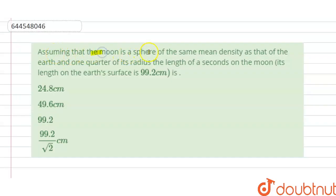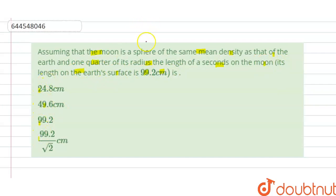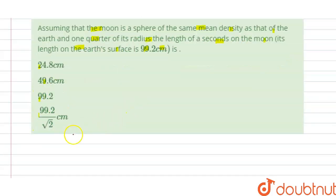Hello students. Today our question is: assuming that the moon is a sphere of the same mean density as that of Earth and one quarter of its radius, find the length of a seconds pendulum on the moon. Its length on the Earth's surface is 99.2 centimeters. Options a, b, c, d are given — we have to find the correct option.